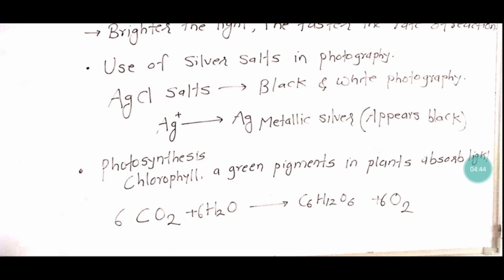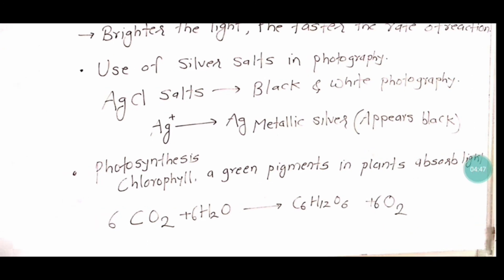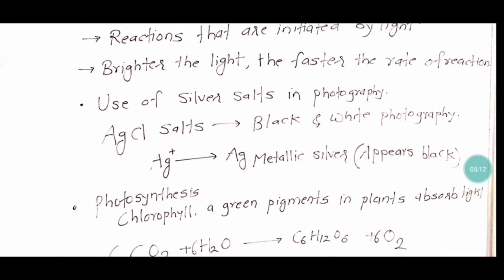Another example of light affecting reaction rate is photosynthesis. Plants take in carbon dioxide and water, and in the presence of sunlight, the chlorophyll in the plants absorbs the light and converts carbon dioxide and water into glucose and oxygen. This covers all the factors affecting the rate of reaction. Thank you so much.